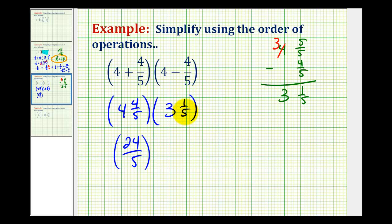For 3 and 1 fifth, we'll have 5 times 3, that's 15, plus 1, that'll be 16 fifths.